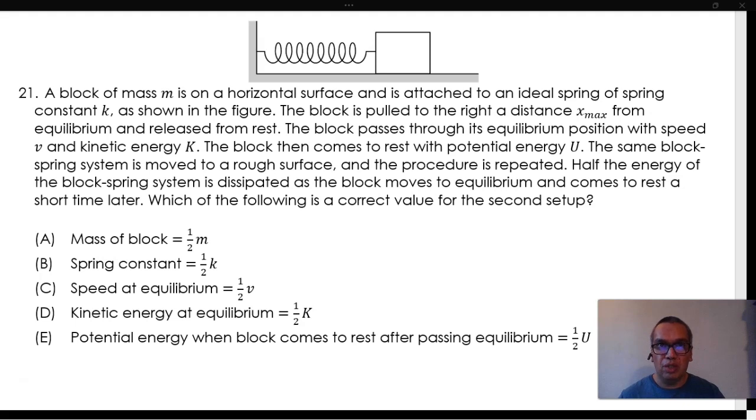The block passes through its equilibrium position with speed B and kinetic energy K. The block then comes to rest with potential energy U.